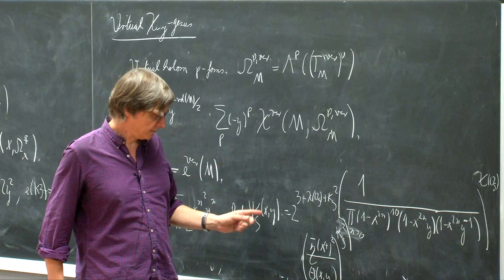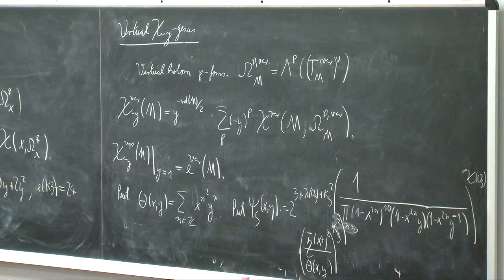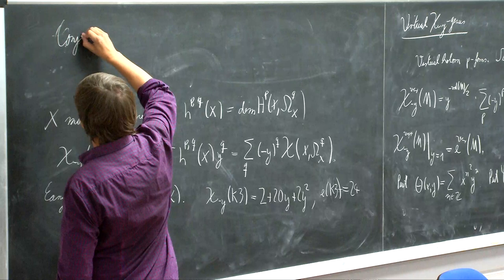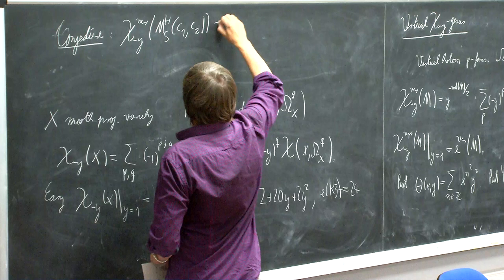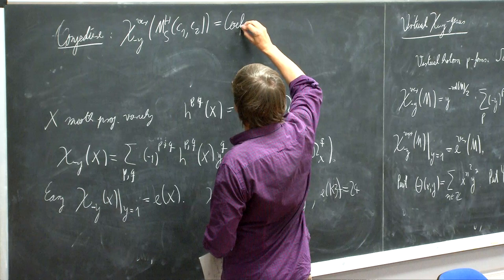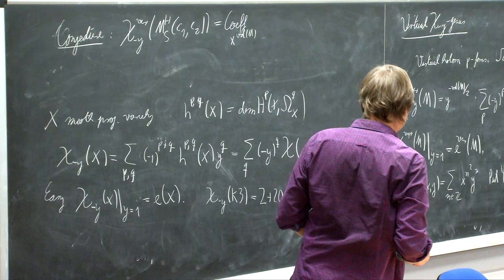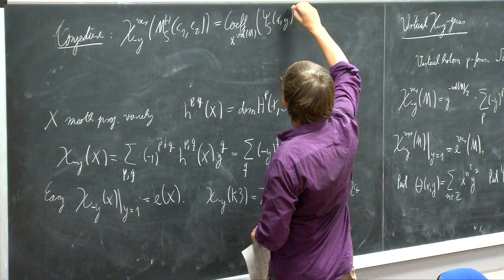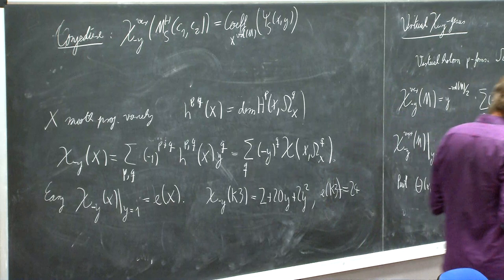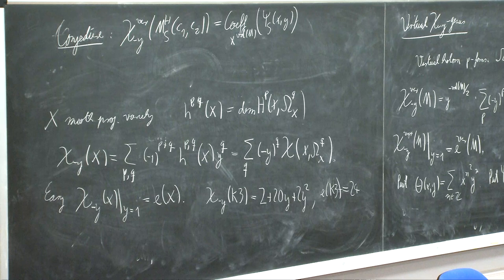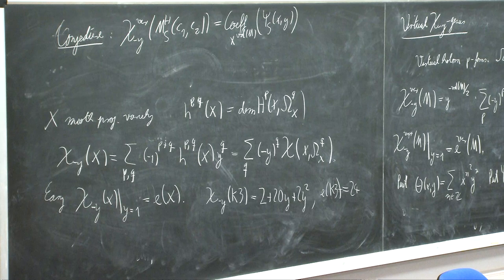So this is the formula — as you can see, it's the same formula as before if we put y equal to 1. The conjecture is that the chi-y genus of this moduli space is the coefficient of x to the virtual dimension of M of this expression psi_S(x,y). This will be a polynomial in y if I take the coefficient of x to the VD. And this is the same formula as before — if we put y equal to 1, this reduces to eta of x squared to the 12 as before, and this theta function also just becomes the theta zero value when y is set equal to 1. So this generalizes the previous formula.